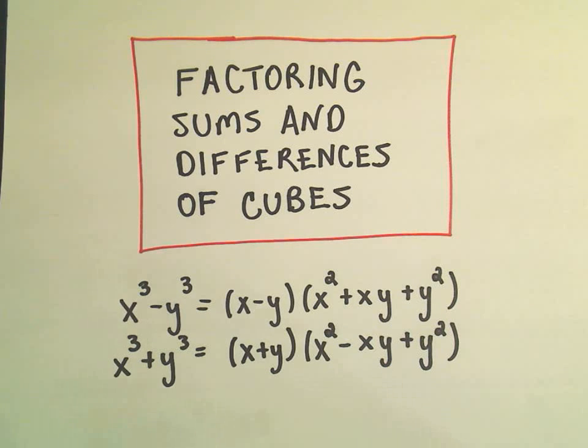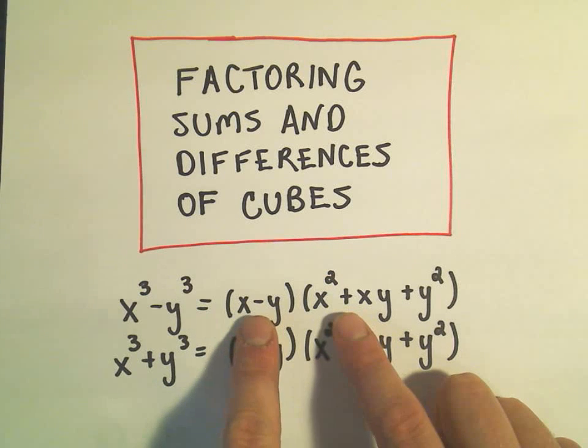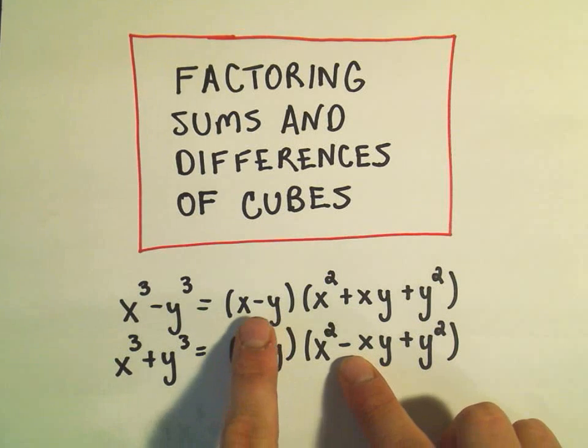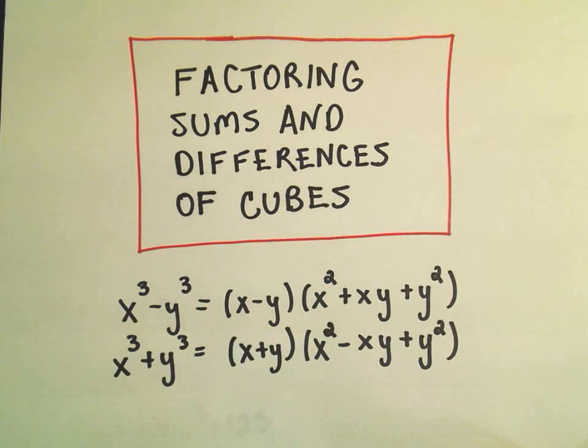Couple remarks. Notice the formulas are the same except for the negative and the positive switch out in the first two spots. So it starts negative, positive, and then positive, negative, assuming you write the binomial term first.